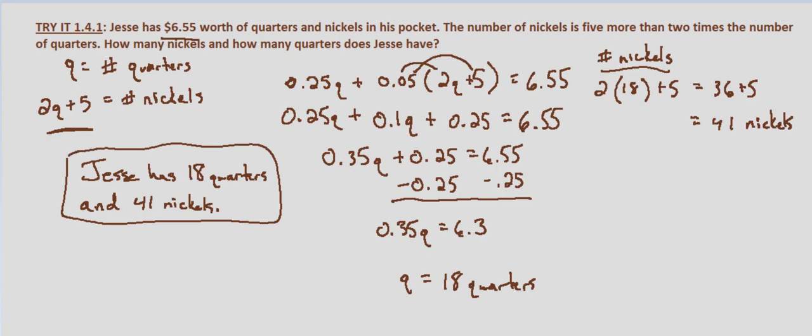We just need to verify that 18 quarters and 41 nickels makes $6.55. So we check: does 0.25 times 18 plus 0.05 times 41 equal 6.55?